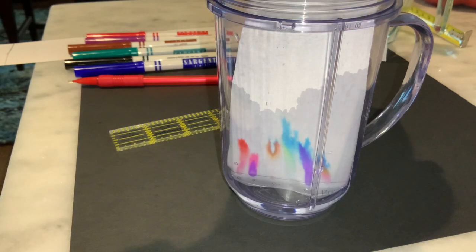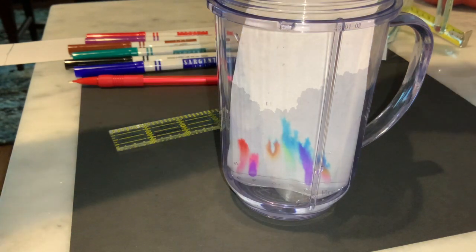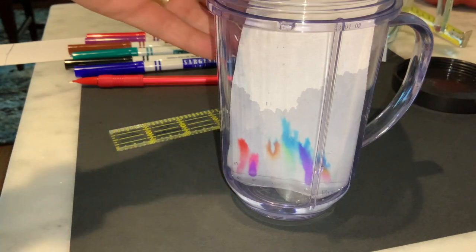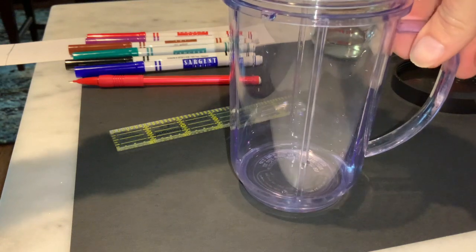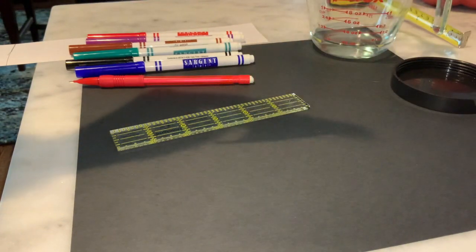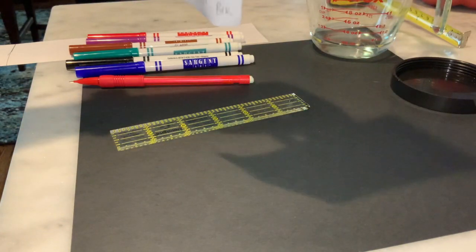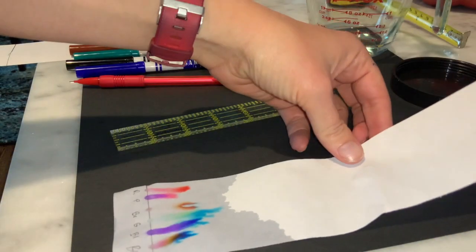So at this point we've gotten enough separation. We haven't gone all the way up the paper yet. We've gotten enough separation that you can see the different dyes present in our markers. So we'll go ahead and remove our paper and let it sit down and dry.